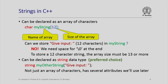A string can also be declared using the string data type, which is in fact the preferred choice in C++ programming. For example, you could say a variable of data type string initialized to the value 'Give input: '. The string data type is certainly an array of characters, but it also has several attributes that are very useful when doing C++ programming.